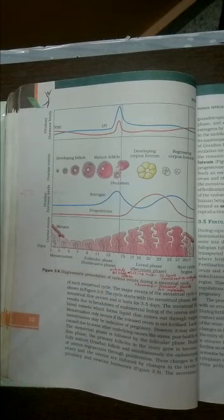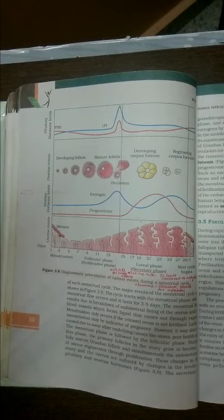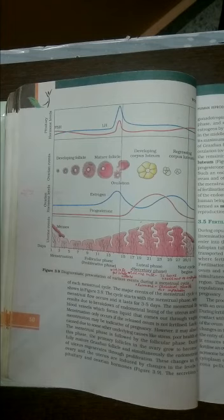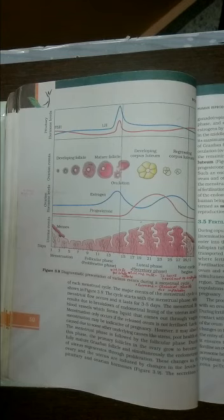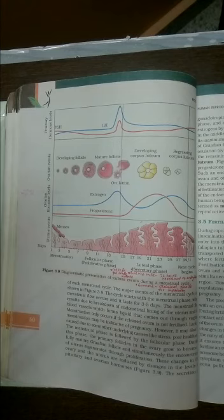Menarche, actually menorrhea is the word. Menorrhea means a normal menstrual cycle. Amenorrhea means abnormal menstrual cycle or you can say absence of the menstrual cycle. And in the same manner there is one more word and that is dysmenorrhea. Dysmenorrhea means painful menstrual cycle.